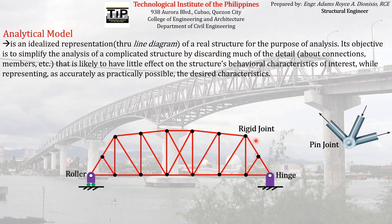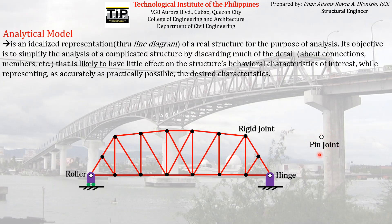Sometimes the joint is a pin joint instead of a rigid joint. The representation of a pin joint is a different symbol — you don't need to draw the exact diameter of the pin or the detailed appearance. You only need to represent that it is a pin joint using this symbol. The resulting simplified structure with all these representations — line members, support symbols, and joint symbols — is what we call the idealized structure. The details shown in this idealized structure are all that we need to fully analyze the structure and find the forces in each member.